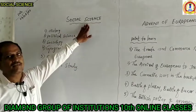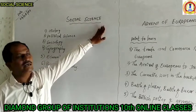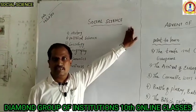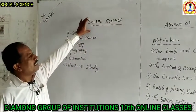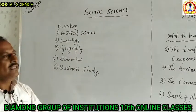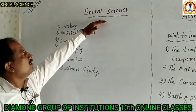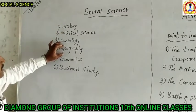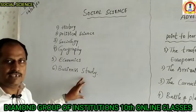We know that social science gives us knowledge related to society and science. In social science we are going to study related points. There are some sub-parts: history, political science, sociology, geography, economics, and business study.